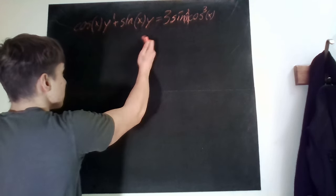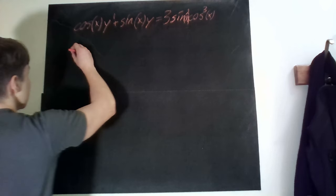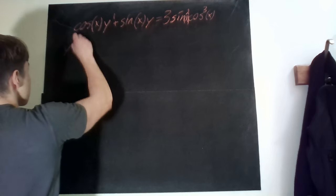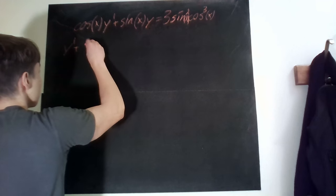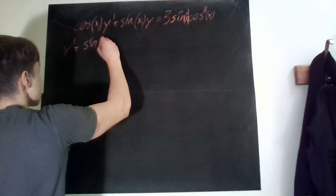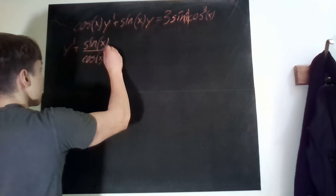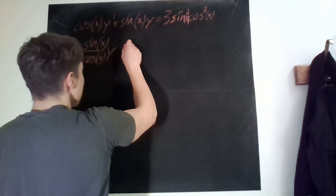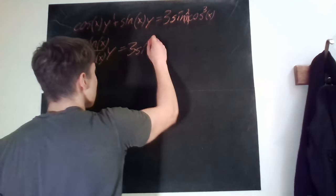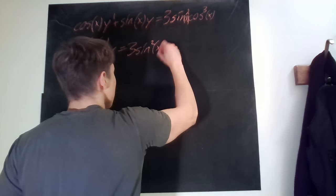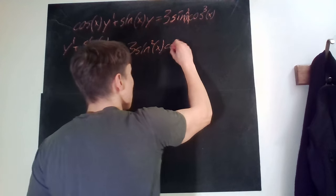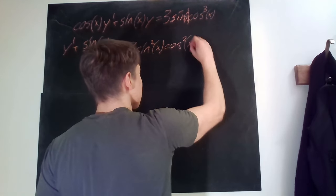So we would of course get y prime plus sine x over cosine x times y equals three sine squared of x times cosine squared of x, because we're dividing by cosine.